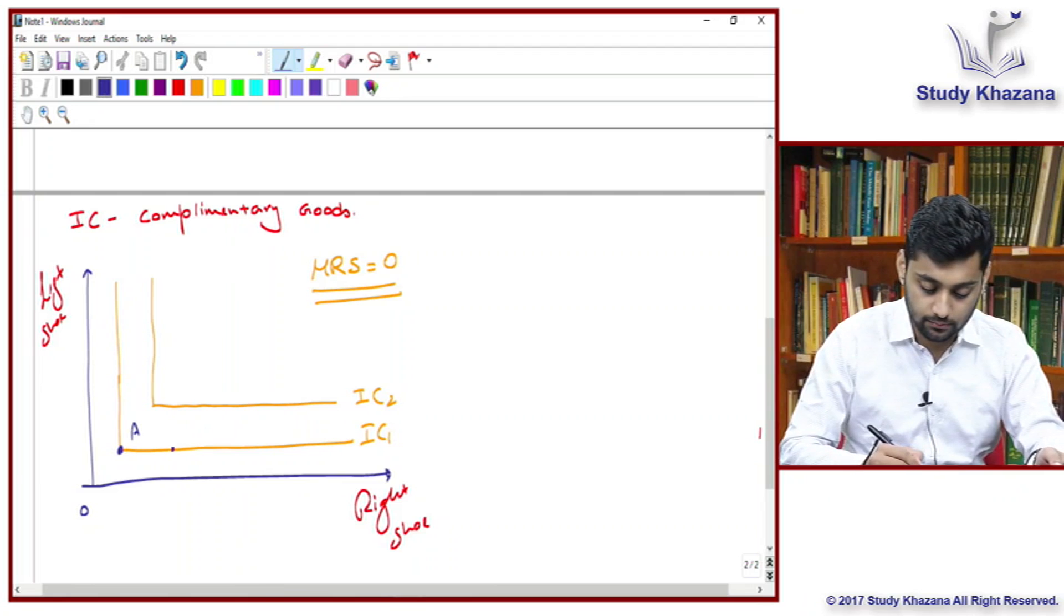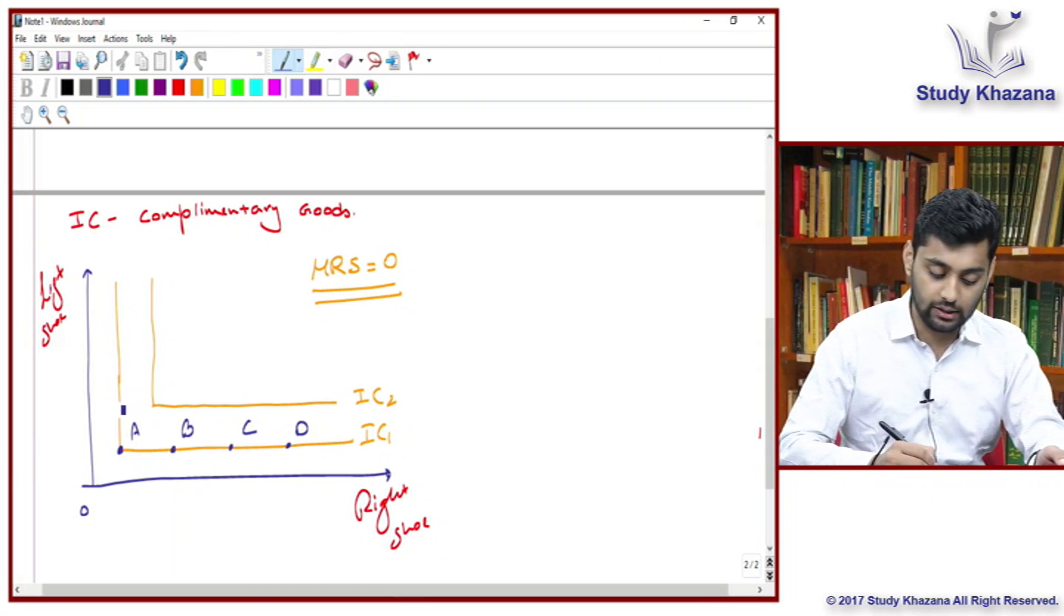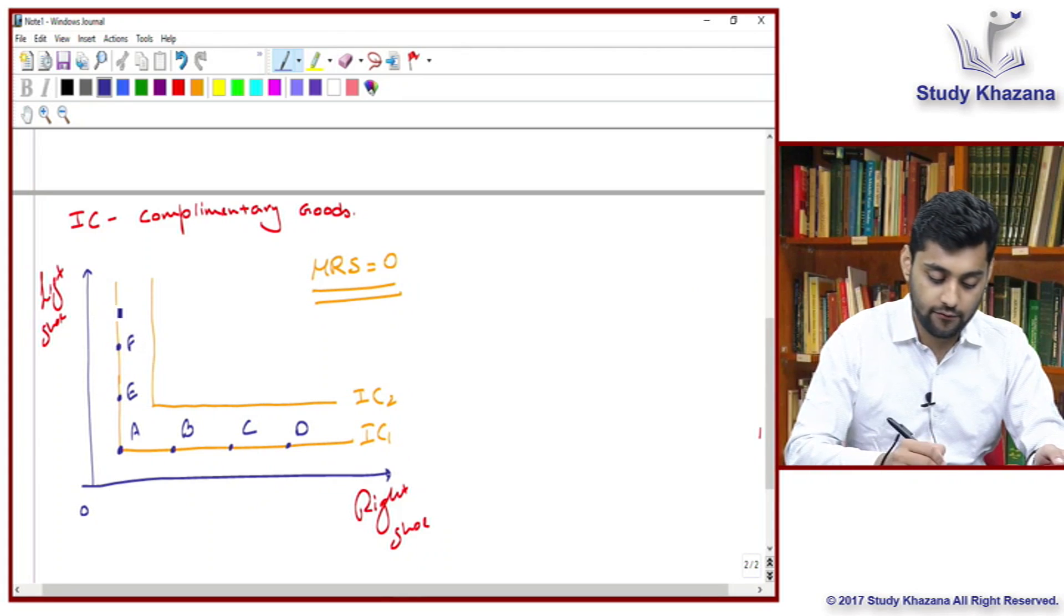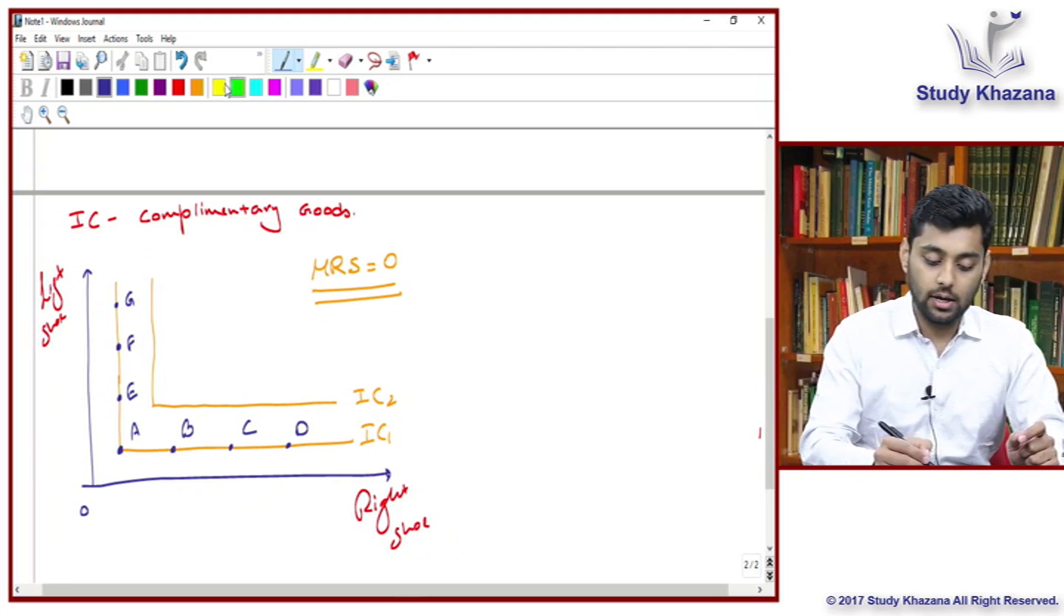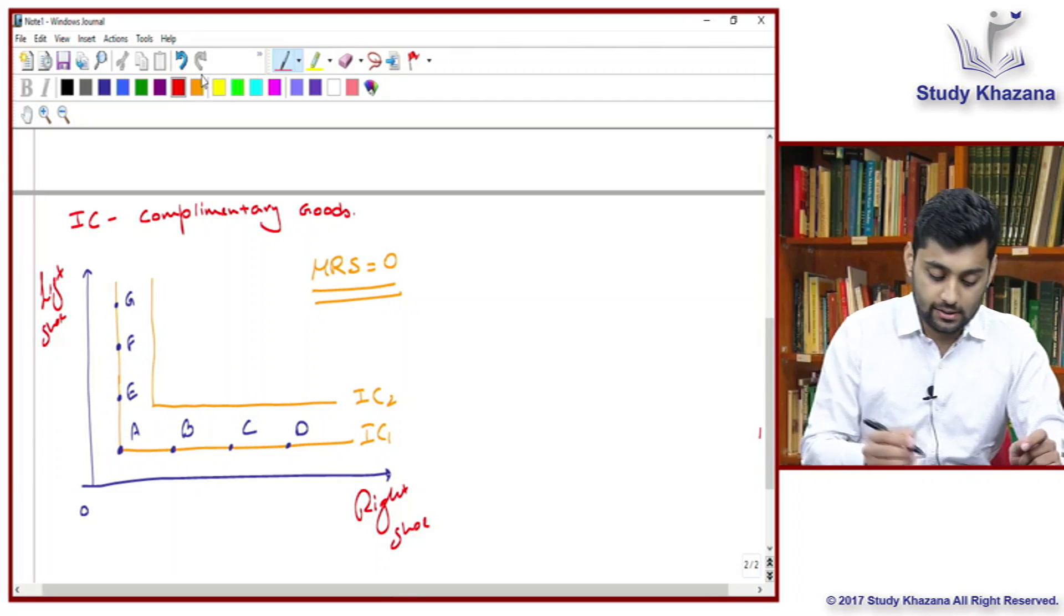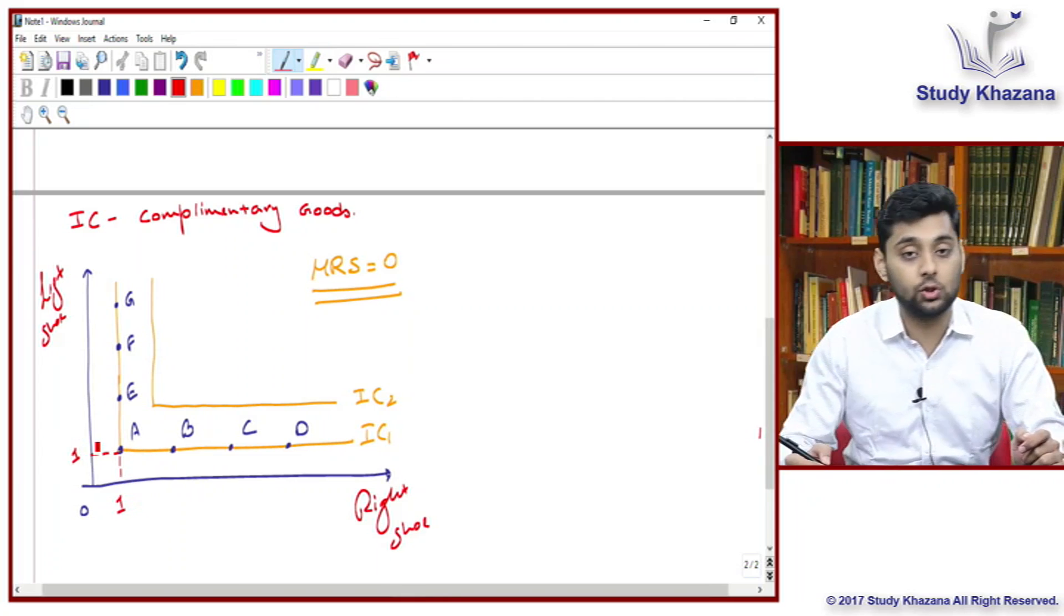Marginal rate of substitution talks about substitution. In the case of complementary goods, there is no substitution. If they are used, both will be used together, otherwise neither will be used. So that is the basic meaning of MRS equals zero. But what is the reason behind that L shaped curve? Why is the curve L shaped? Let's mark a few points on this curve.